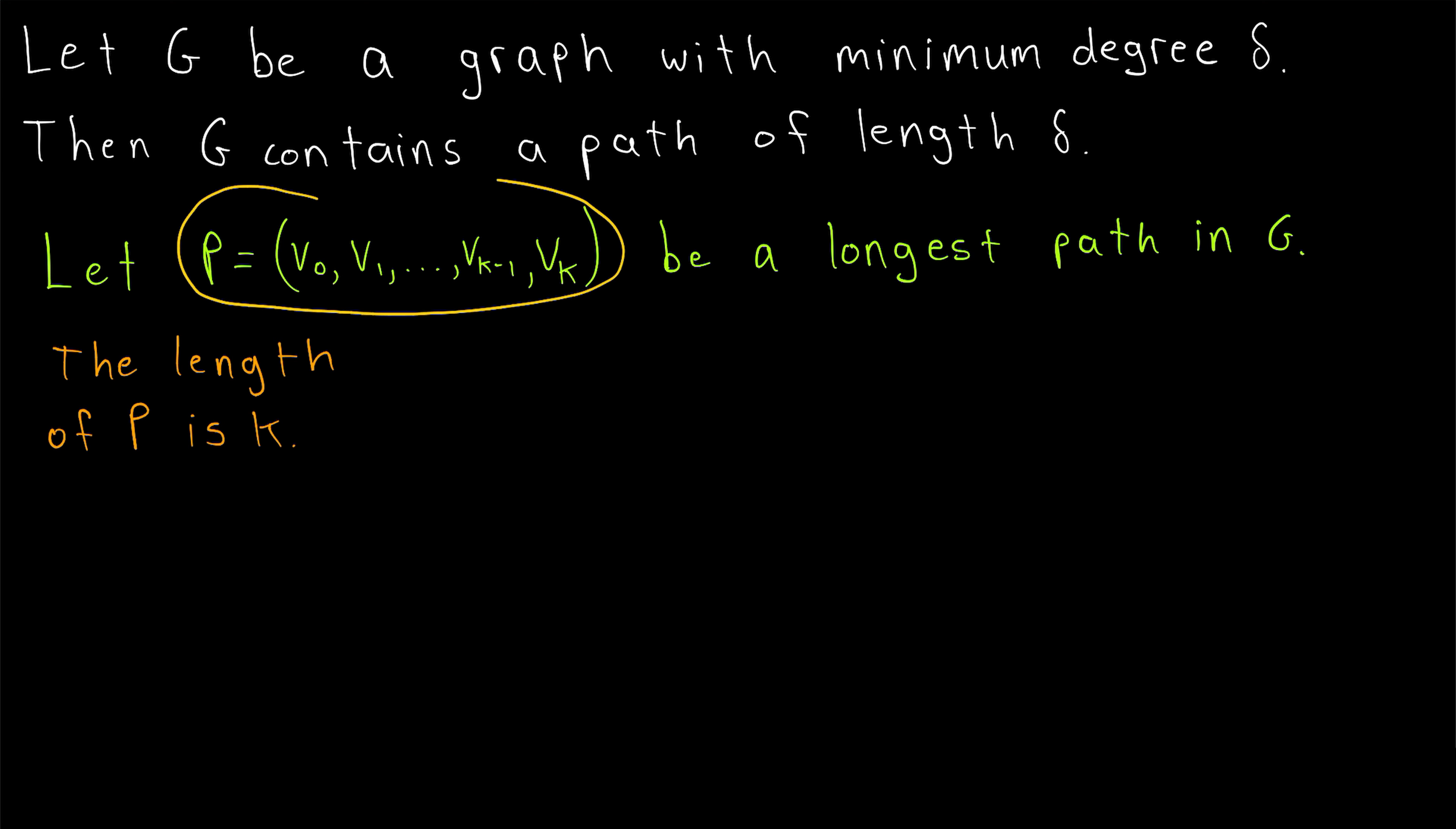What's really useful about considering longest paths is the information that we know about our final vertex. Certainly, the final vertex vk has a degree that's greater than or equal to the minimum degree of the graph. The degree of vk is greater than or equal to delta. vk has at least delta neighbors.